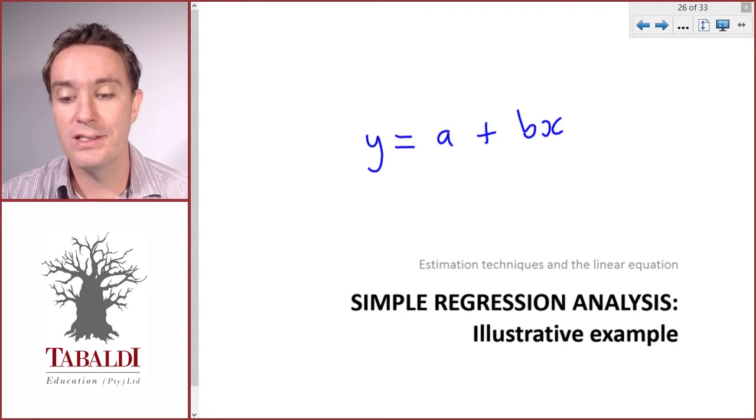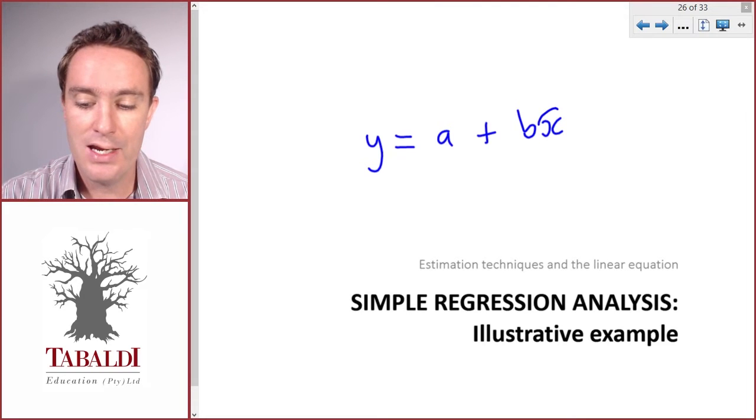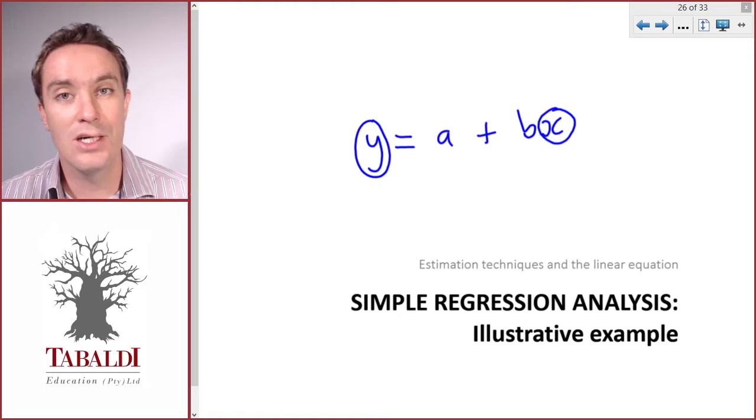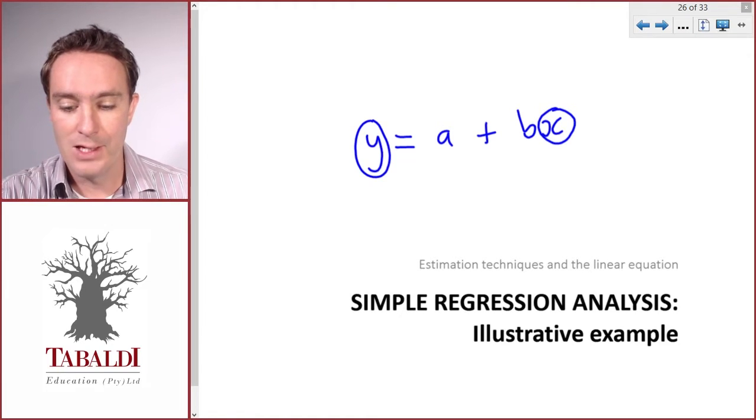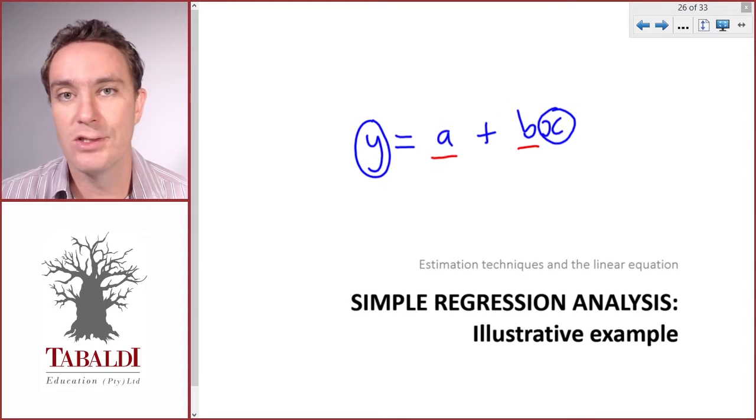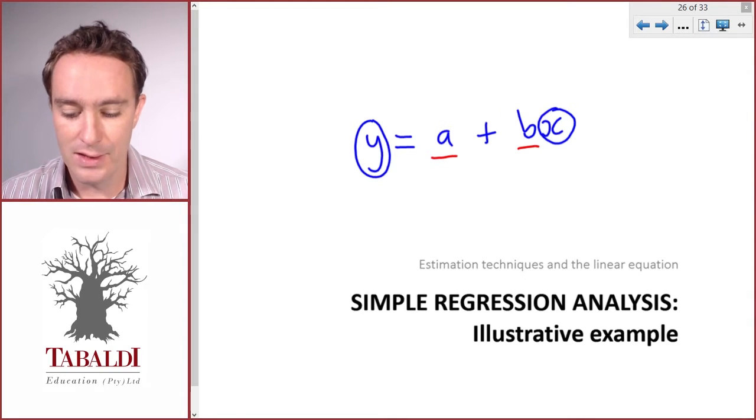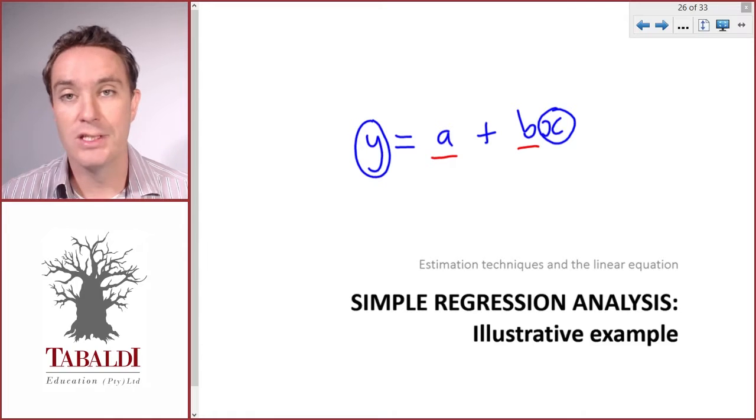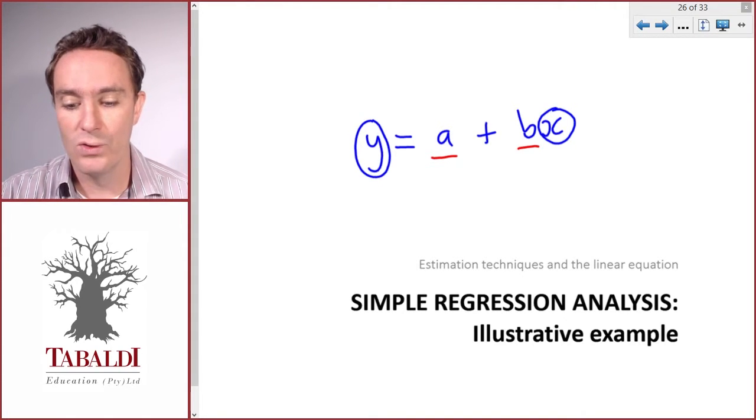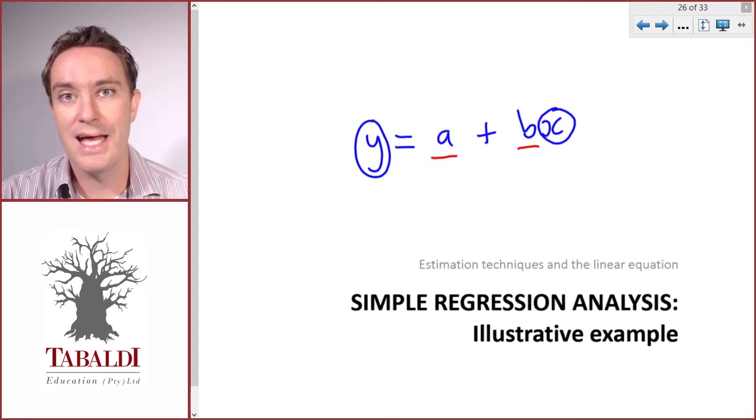Once we have this linear equation, we can input any activity level or x and then calculate our corresponding total cost or y. So we want to calculate our a and our b, or our fixed cost and our variable cost per unit. Simple regression uses past observations and each of the observations to then statistically calculate a and b.